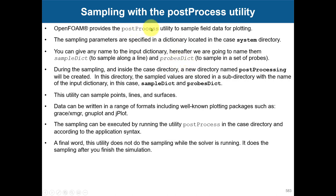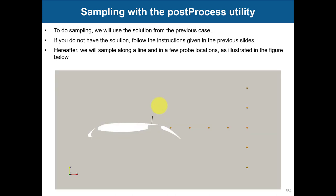Basically you use the postProcess utility as it is — you don't put this option with the solver. You are going to read a dictionary; in this case we're going to read a dictionary called sampleDict and probeDict — this is a user-given name, you can give any name. Here we put the information to sample along a line and to sample at a point. You put this in the system folder, then grab the information and plot it using gnuplot, jplot, Python, MATLAB — it doesn't matter. It's ASCII format.